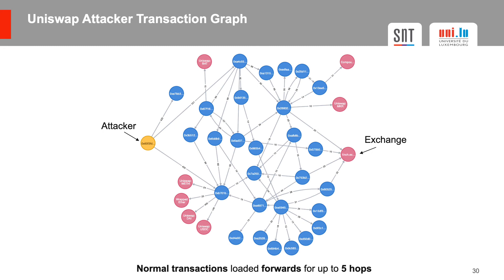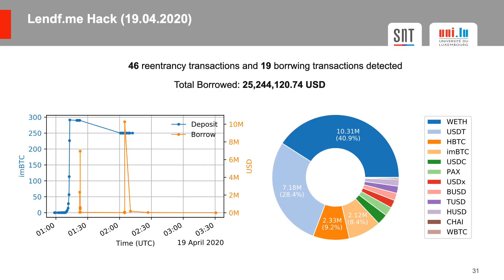Next, we traced the entire Ether flow from the attacker's account for up to 5 hops using HORUS' tracing capabilities. A transaction graph analysis reveals that the attackers exchanged roughly 55% of the stolen funds for tokens on different exchanges such as Uniswap, Compound, and OneInch. One day later, on April 19th, 2020, an attacker performed a similar attack on the Lendf.me exchange.